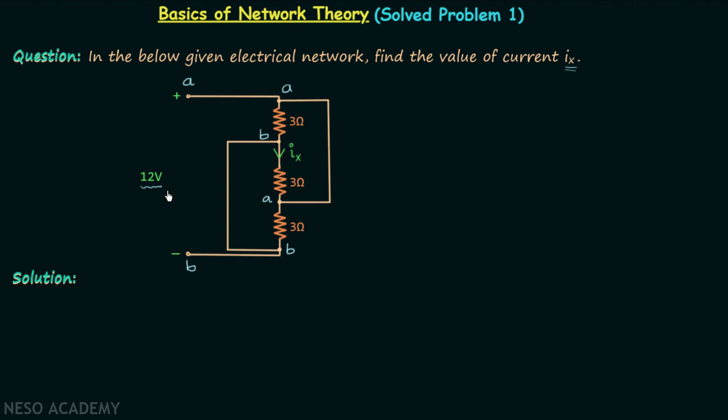Now we will reconstruct our network. Let's say this is terminal A and this is terminal B. When you look at the original network, you will find between A and B we have a 3 ohm resistor, so we will connect one 3 ohm resistor between A and B. Then between A and B